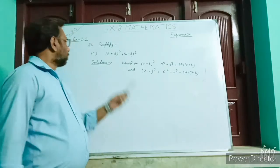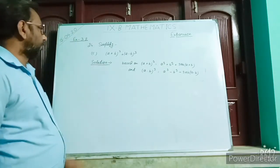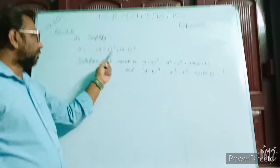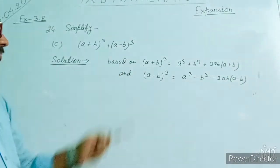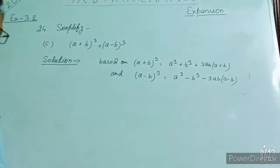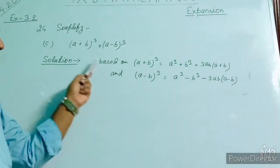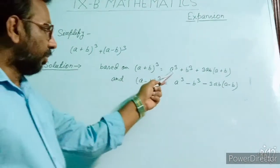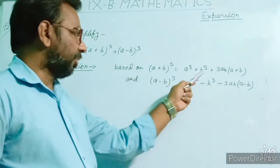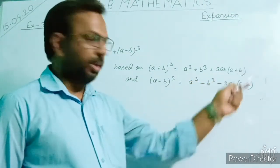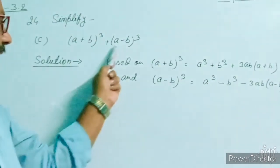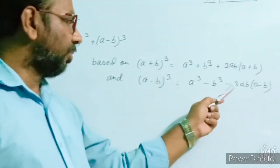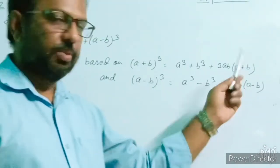Question number 24c: simplify (a + b)³ + (a - b)³. This question is based on the formulas: (a + b)³ = a³ + b³ + 3ab(a + b), and (a - b)³ = a³ - b³ - 3ab(a - b).